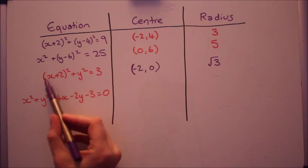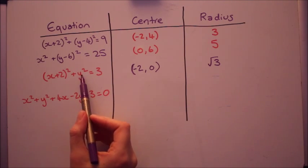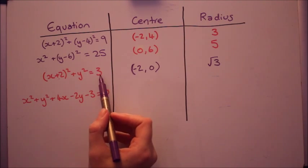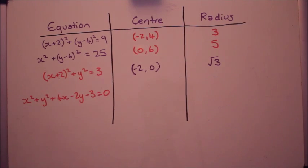So for this one, similarly, y does not have a number so that bit's 0 and I've changed the sign there. And the radius is going to be the square root of that so it's root 3.